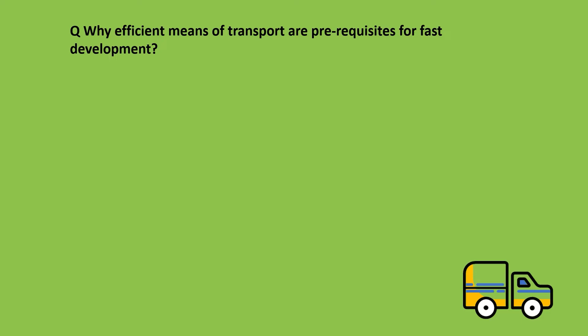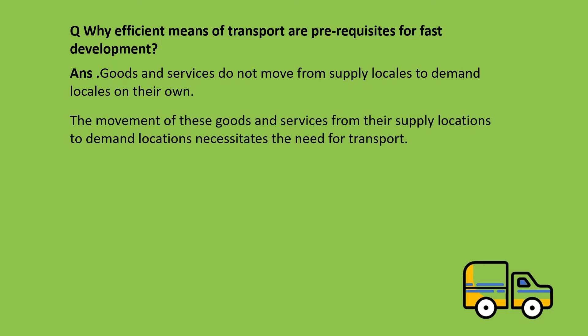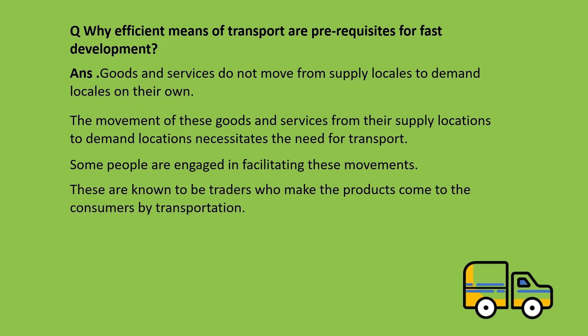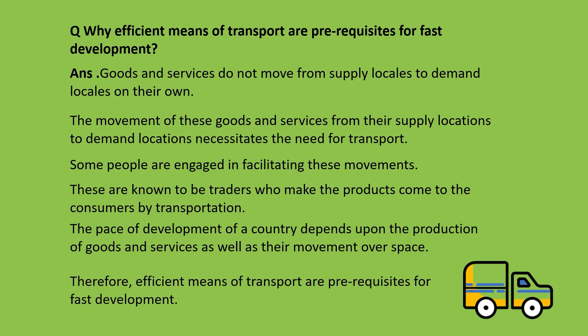Now let's come back to this question. The first point: goods and services do not move from supply locale to demand locale on their own. The product has to be transported from the factory location to the customer's location. The movement of these goods and services from supply to demand location necessitates the need for transport, and this is done by traders. The pace of development of a country depends upon the production of goods and services as well as their movement over space. Therefore, efficient means of transport are a prerequisite for fast development.